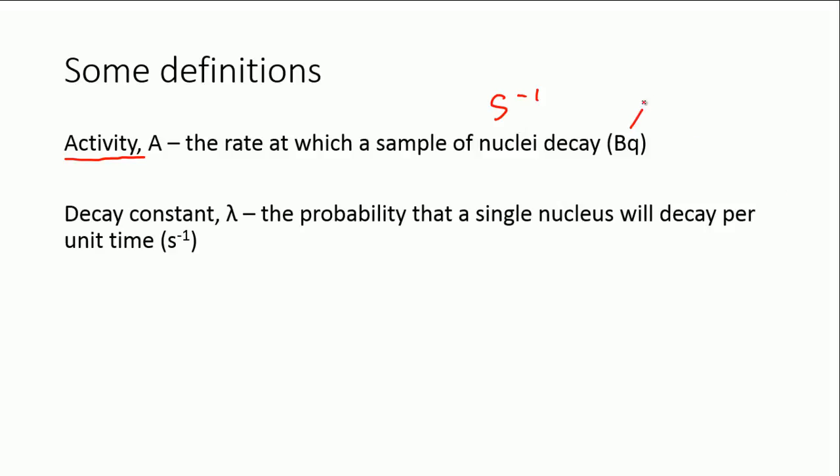The unit is the Becquerel, named after Henri Becquerel, which is B-E-C-Q-U-E-R-E-L, shortened to capital B, little q. So that's the unit there for activity, and one Becquerel is equal to one per second.